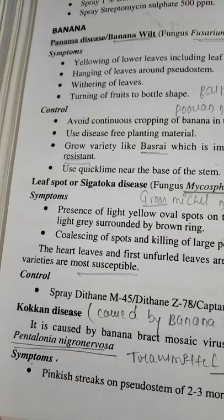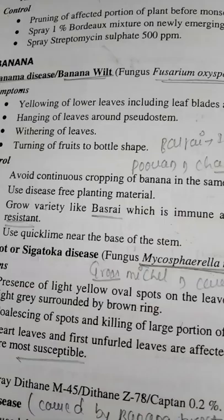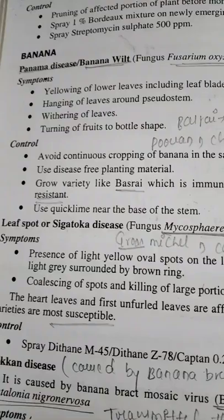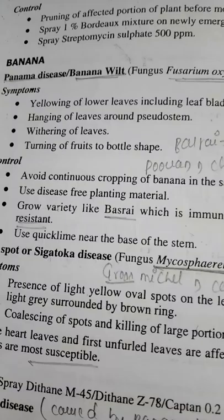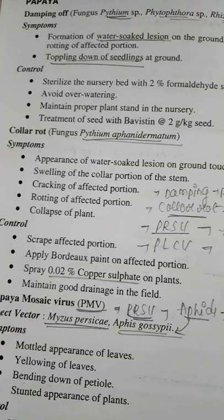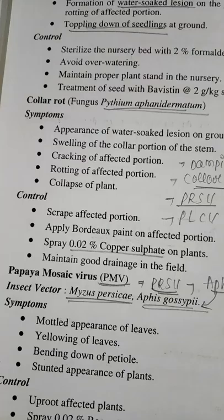So, in the question I asked about BBMB. BBMB is Banana Black Mosaic Virus. Banana has a Kokkan disease, caused by Banana Bunchy Top Virus. The vector of Kokkan disease is Pentalonia nigronervosa. Some diseases of banana: leaf spot or Sigatoka disease was asked in BHU 2019.